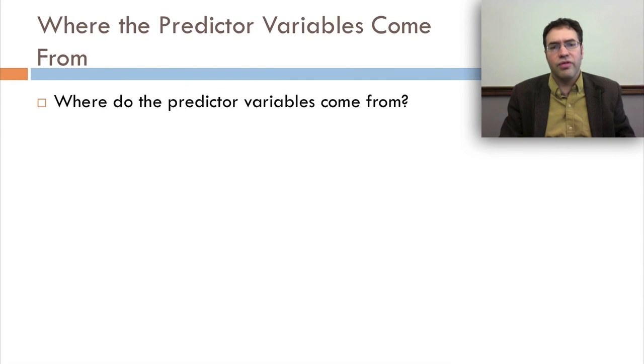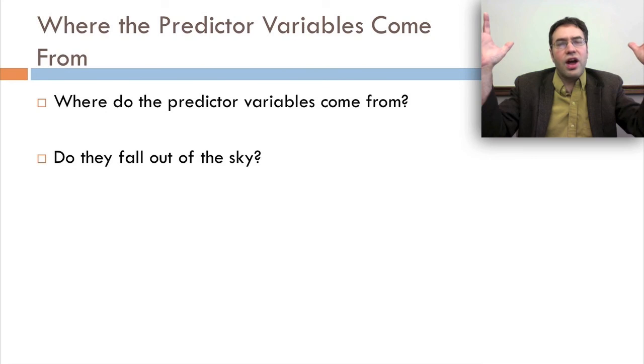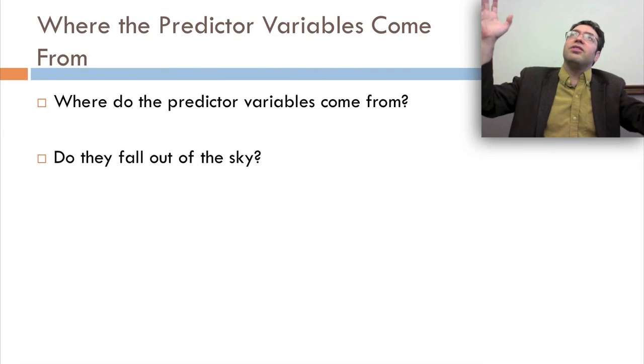But where do the predictor variables come from? Do they fall out of the sky? It's raining data, the data deluge.